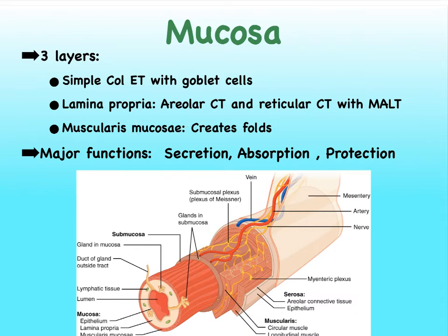The muscularis mucosae is mostly responsible for creating the folds we see in the stomach, small intestine, and large intestine. The functions of the mucosa — primarily looking at the GI tract from the stomach down — include secretion (think of goblet cells secreting mucus, plus many other secretory or glandular cells), absorption (especially in the small intestine; minimal in the stomach and large intestine), and protection, since the epithelial tissue lines the lumen.